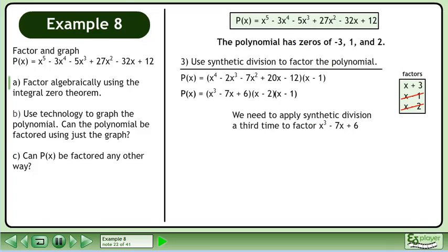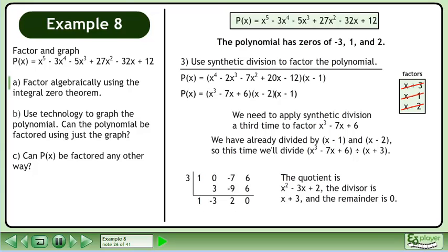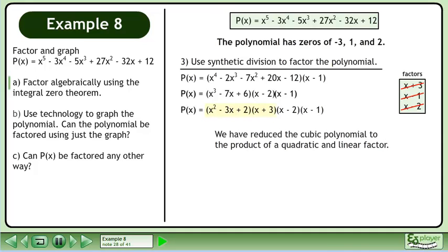We need to apply synthetic division a third time to factor x³ - 7x + 6. We have already divided by (x - 1) and (x - 2), so this time we'll divide x³ - 7x + 6 by (x + 3). Set up and complete the synthetic division. The quotient is x² - 3x + 2, the divisor is (x + 3), and the remainder is 0. Using p(x) = q(x) · d(x) + r, we can write p(x) = (x² - 3x + 2)(x + 3). We have reduced the cubic polynomial to the product of a quadratic and linear factor.